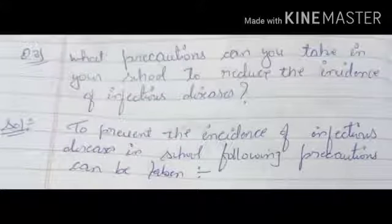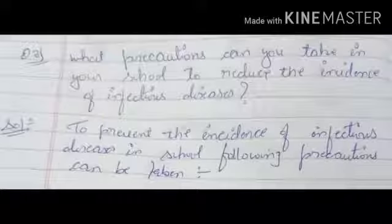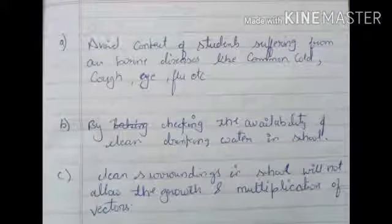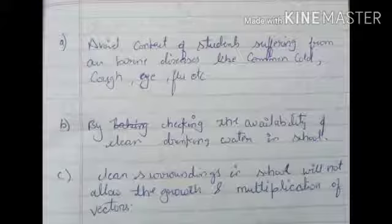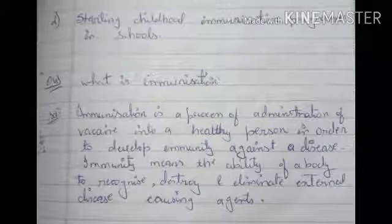Question 3: What precautions can you take in your school to reduce the incidence of infectious disease? First, avoid contact with students suffering from contagious diseases like the common cold, cough, and eye flu. Second, ensure the availability of clean drinking water in school. Third, keeping clean surroundings in school will not allow the growth and multiplication of disease vectors. Fourth, starting a childhood immunization program in school.